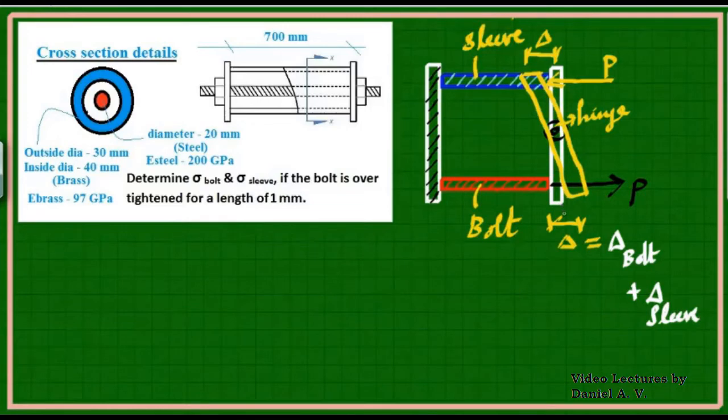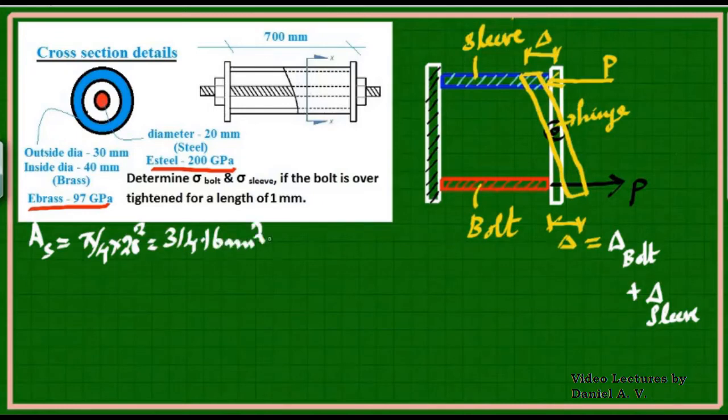This deformation is the effect of elongation and compression, so delta = delta bolt + delta sleeve. This is exactly what we require to solve this problem. The area of steel equals π/4 × 20² which gives 314.16 mm².